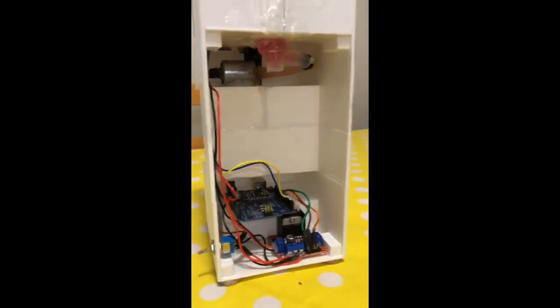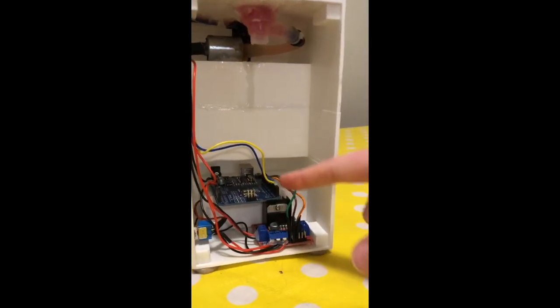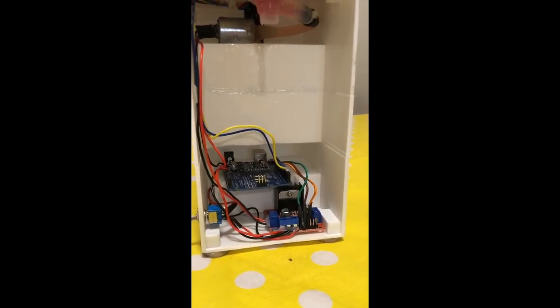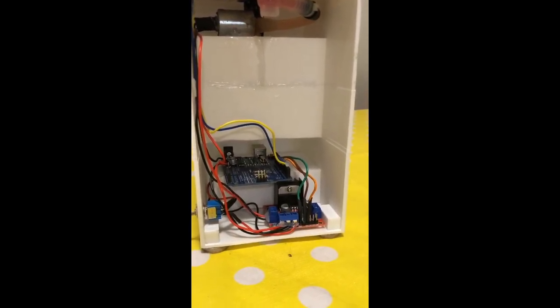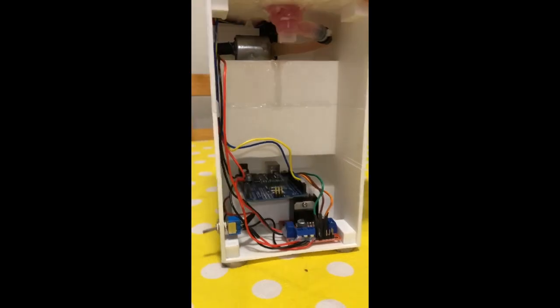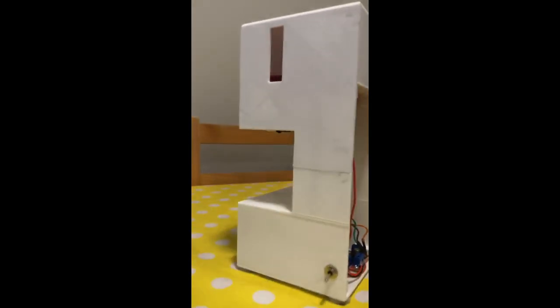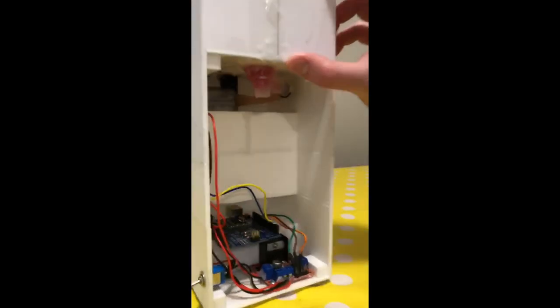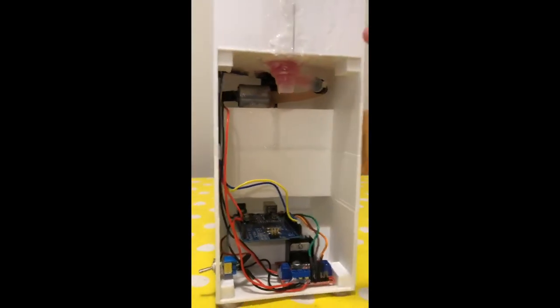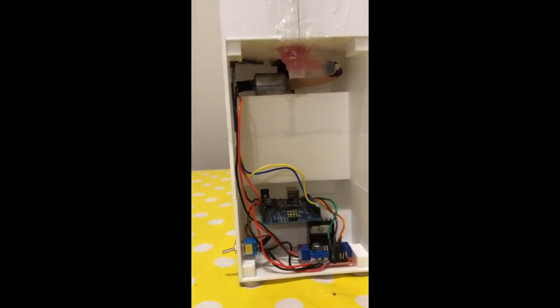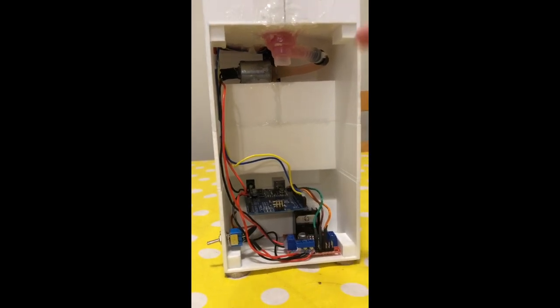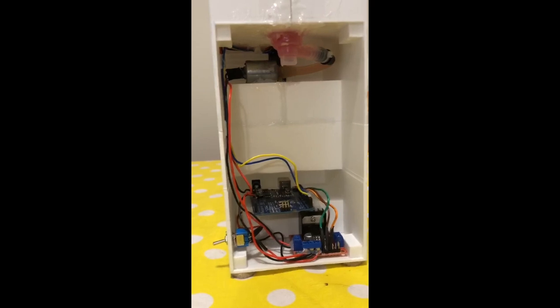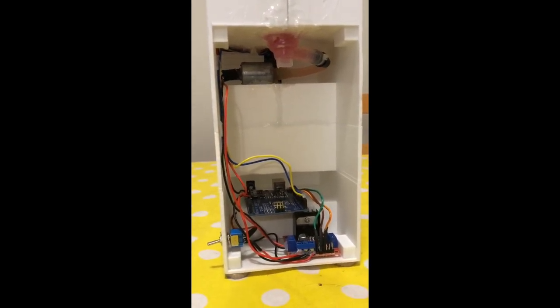Basically, the Arduino takes everything, and we have the program on it that allows for proper implementation. The soap from the soap holder gets fed through a tube to the solenoid valve. When the sensor indicates there is an obstacle, it communicates to the Arduino, which communicates to the motor driver, which communicates to the solenoid valve. The solenoid valve opens and changes polarity for allowing dispense.